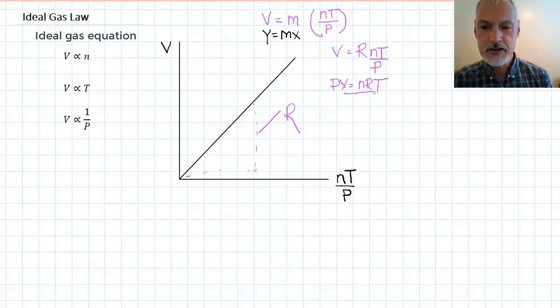Now, a little bit about the units of r. r, as I mentioned, is the slope of this line, which would be a change in volume on the top, and the bottom would be the change in nt over the pressure. Now, if I use for my change in volume, units of decimetres cubed, the units of n are mole, the units of t are kelvin,